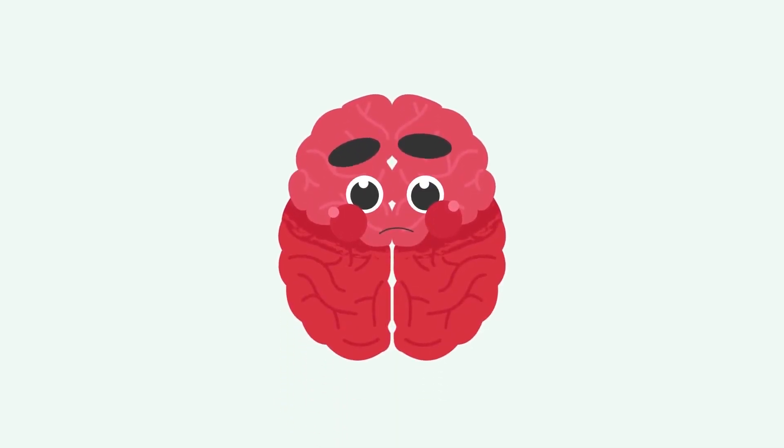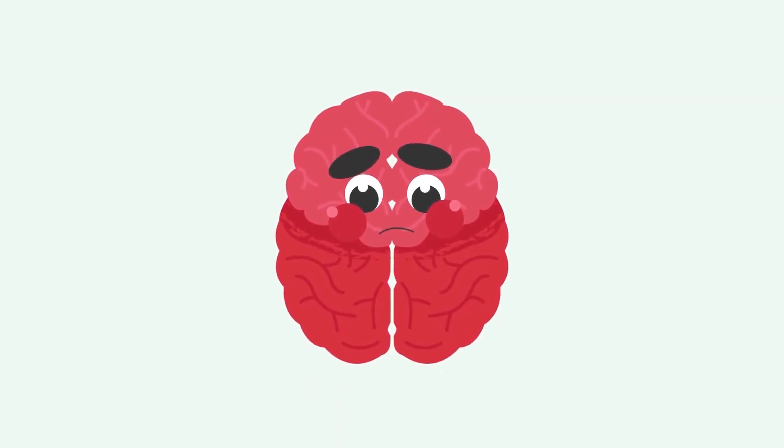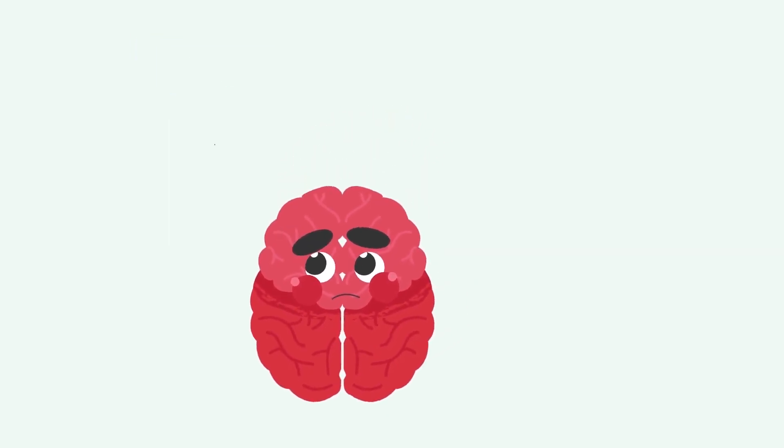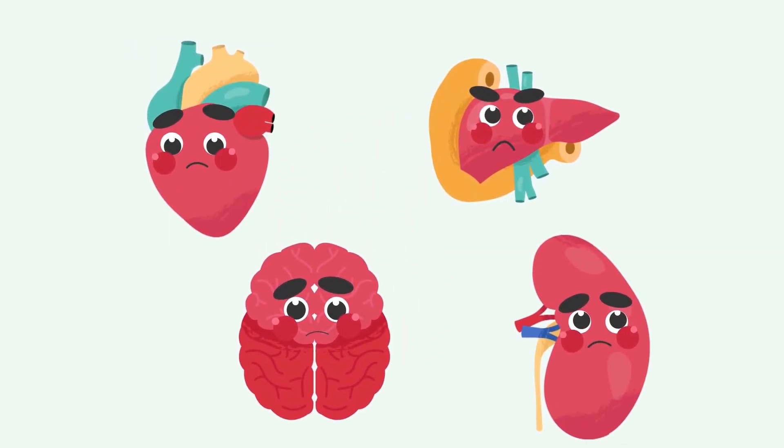Your brain faces a lot of challenges when you have depression, and this is because it becomes harder for it to communicate. You see, like any of your other organs, parts of your brain can sometimes malfunction, making it harder for it to moderate your emotions.